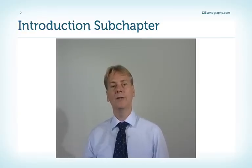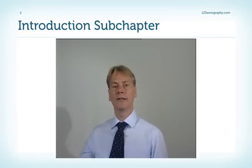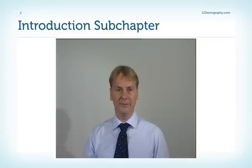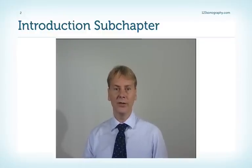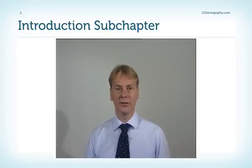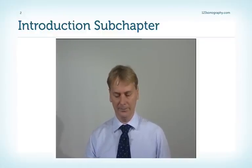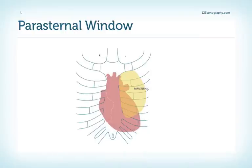When we perform an echo exam, we should go about in a standard fashion. We should always use the same sequence, and the first window we use is the parasternal window. The parasternal window is located on the left of the sternum, and we use the intercostal spaces — either the second, third, or fourth intercostal space — depending on the axis of the heart.